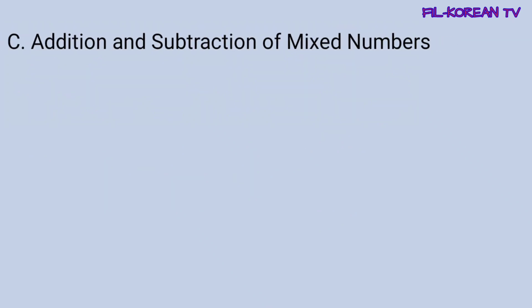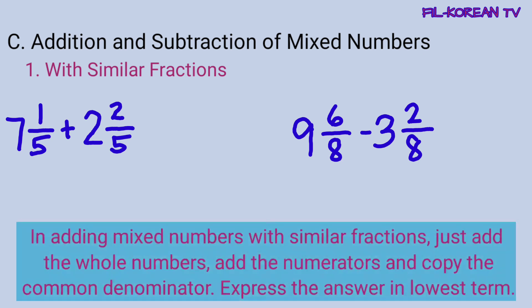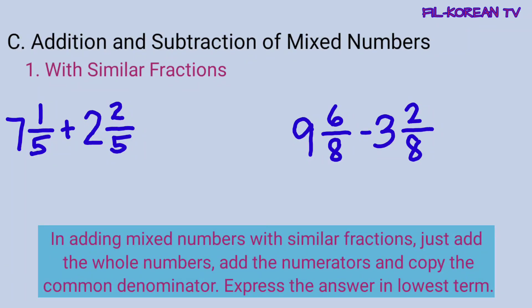This time, we will add and subtract mixed numbers. Unahin muna natin yung with similar fractions. In adding mixed numbers with similar fractions, just add the whole numbers, add the numerators, and copy the common denominator. Express the answer in lowest term. Sa pag-add ng mixed numbers na may similar fractions, i-add natin yung whole numbers, i-add din natin yung numerators, at kukopyahin natin yung common denominator. At i-re-reduce natin yung answer sa lowest term kung kinakailangan.